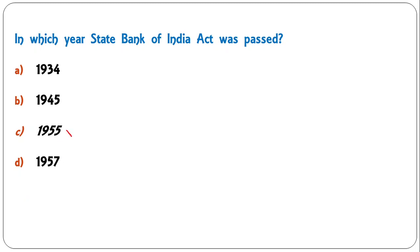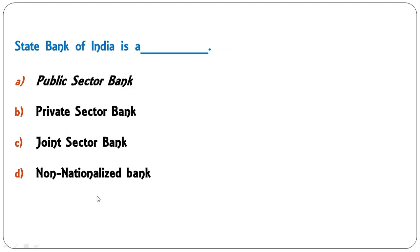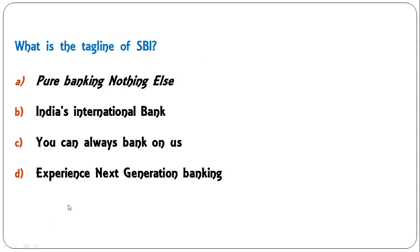In which year was the State Bank of India Act passed? Options are 1934, 1945, 1955, or 1957. The correct answer is 1955. Next: State Bank of India is a blank bank — public sector bank, private sector bank, joint sector bank, or non-nationalized bank. The obvious answer is that SBI is a public sector bank.